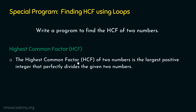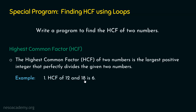This is the meaning of common factor, and there can be many common factors of two numbers. Now, what about highest common factor? There can be only one highest common factor. We are interested in finding the largest common factor of the two numbers — that is what highest common factor is. The definition says: the highest common factor of two numbers is the largest positive integer that perfectly divides the given two numbers. Now let's look at one simple example. HCF of 12 and 18 is 6 — why is that the case?